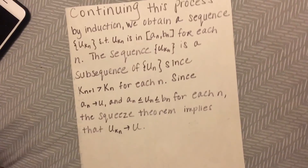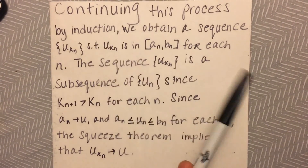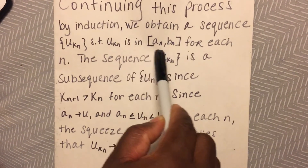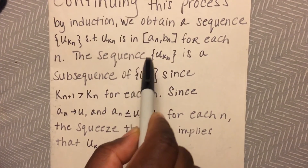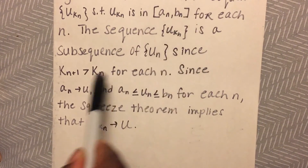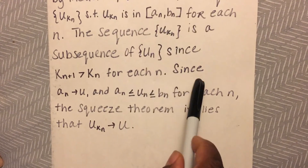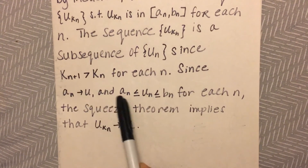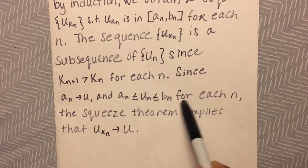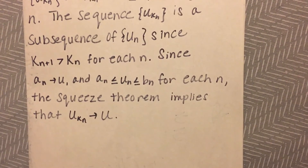Continuing this process by induction, we obtain a subsequence U sub K sub N such that U sub K sub N is in the interval [A sub N, B sub N] for each N. The sequence U sub K sub N is a subsequence of U sub N since K sub N+1 is greater than K sub N for each N. Since A sub N converges to U, and A sub N ≤ U sub K sub N ≤ B sub N for each N, the squeeze theorem implies that U sub K sub N converges to U.